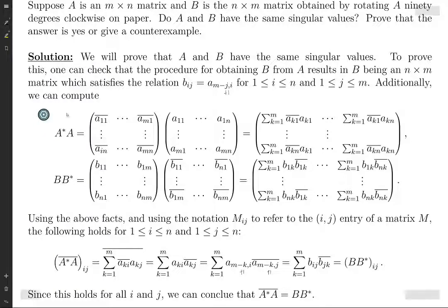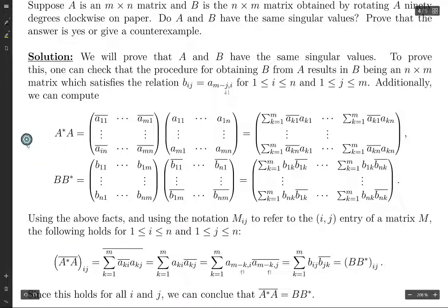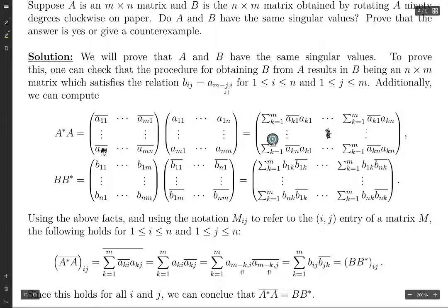Because we want to get at the equation that the complex conjugate of A star A equals B times B star, we compute these two things. A star A: A star is obtained by taking the complex conjugate of everything and then transposing it. If you imagine what happens when you multiply these out — I just worked out the four corners — you can fill in what things depend on what. Taking this row multiplied by this column gives you a certain sum, and so on.